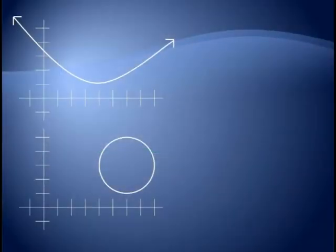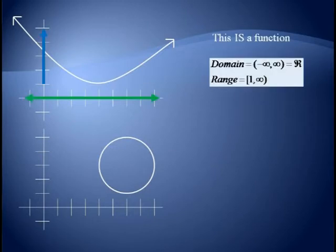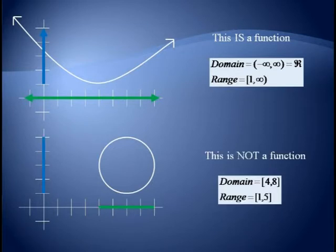Consider some examples. Our top graph here is a function since it passes the vertical line test. If we smash this down to the x-axis, you pick up the entire number line, so the domain is all real numbers. If we smash this graph against the y-axis, we'll just get the values of y greater than or equal to 1. The second graph fails the vertical line test, so it's not a function, but we can still find the domain and the range. Smashing this down on the x-axis, we see the domain as the interval 4 to 8, and smashing this graph against the y-axis, we see the range is 1 to 5.